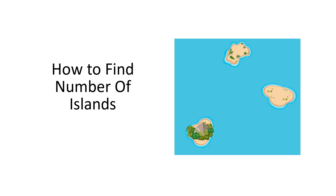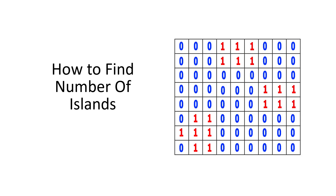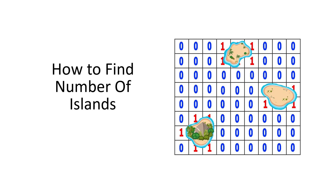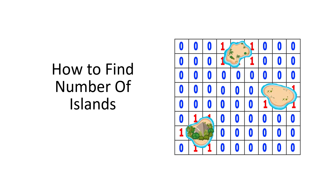They simply want us to count the number of islands in the map. The map is not a real map — it is just a two-dimensional array or a vector. 1s represent an island, and 0s are not an island; they represent sea or something else.